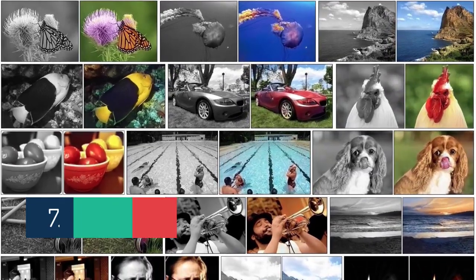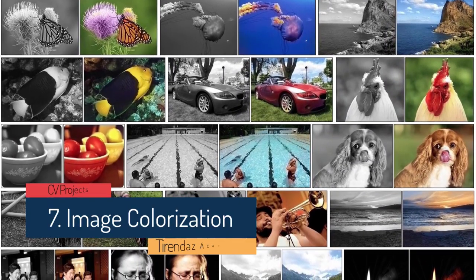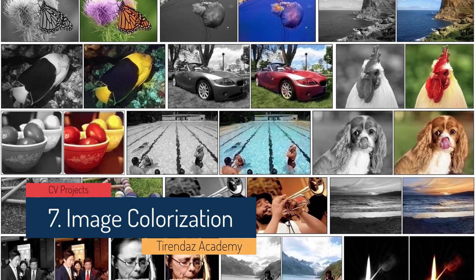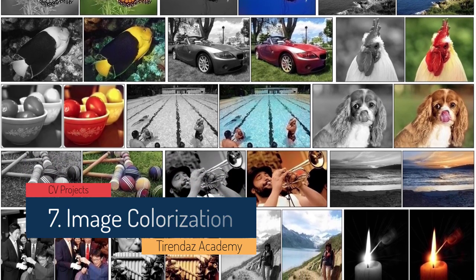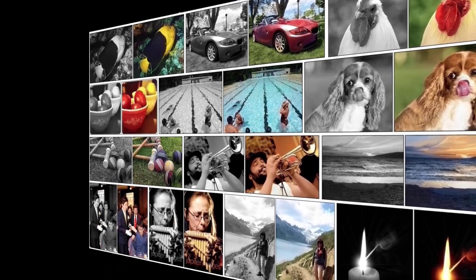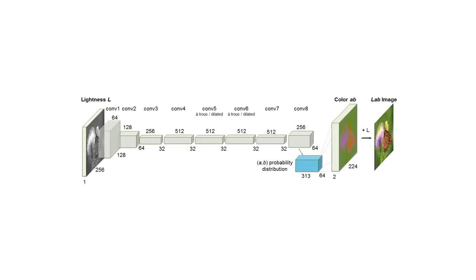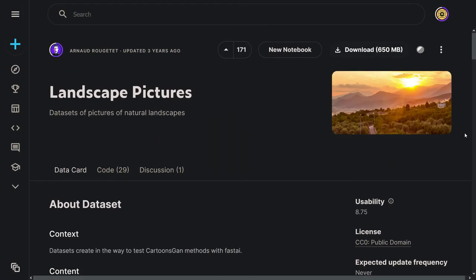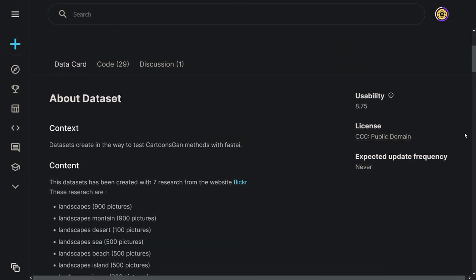The last computer vision project I will talk about is image colorization. Many people struggle to imagine the colors in old grayscale images. With computer vision, you can build a smart image colorization system to help bring these images to life. To implement this project, you can use the VGG-16 model and the image data generator to rescale the images. Then, convert the RGB format to LAB and create a sequential model for autoencoders using Keras. Finally, test the performance of the model using test images. You can use the landscape pictures dataset on Kaggle for this project.